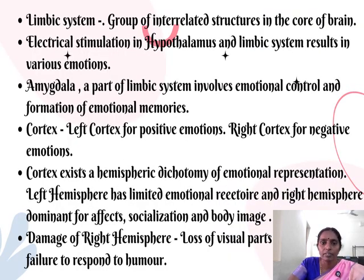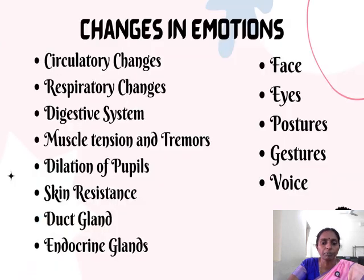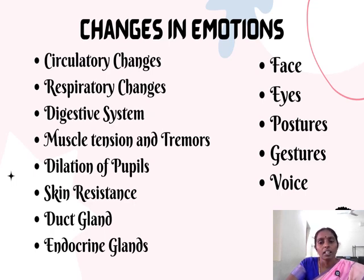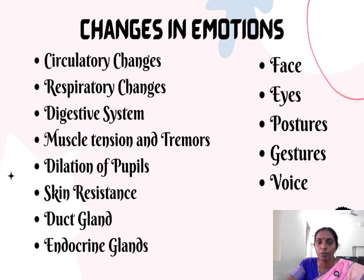In this slide I have concentrated on the limbic system and cortex, which play a predominant role in emotional representation. These are the changes we can observe when we have emotions — we can express them through the face and eyes. By observing someone's face, eyes, and postures, we can guess what type of emotional state they are in.